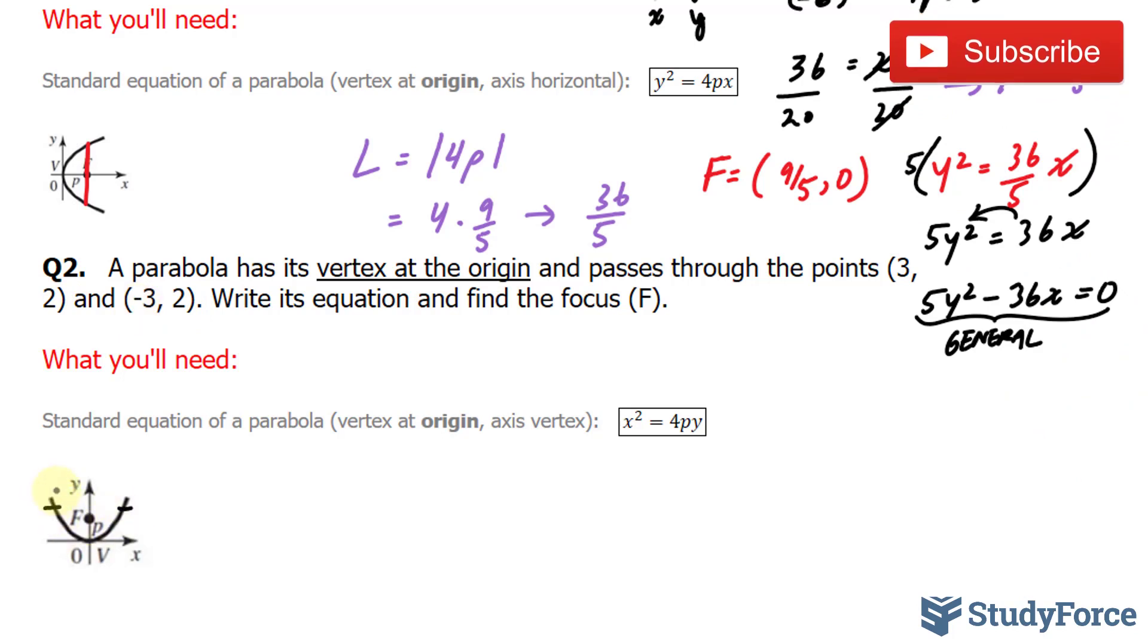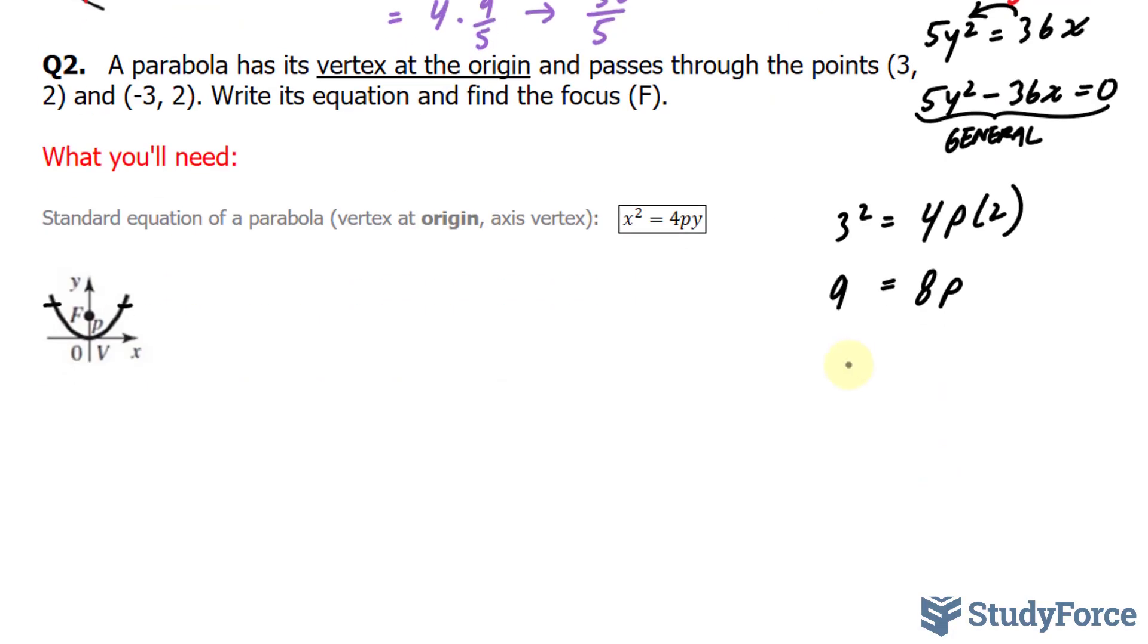Therefore, we can deduce that it looks like this. Let's do the same thing as we did before and substitute one of these points into the standard equation of a parabola. We end up with, and we'll use the first point (3, 2), 3² = 4 × p × 2. Now, let's solve for p. This part is equal to 9 and the right side is equal to 8p. Divide both sides by 8, we end up with 9/8 = p.